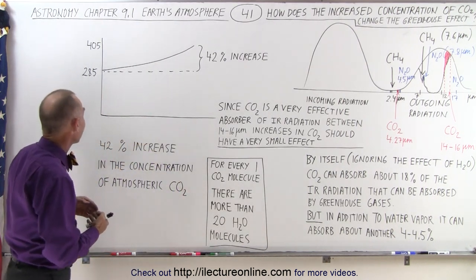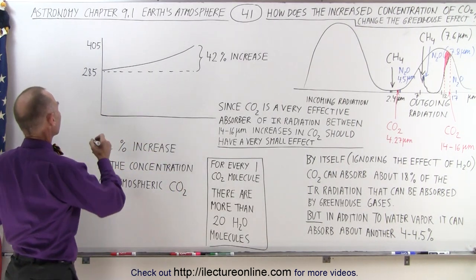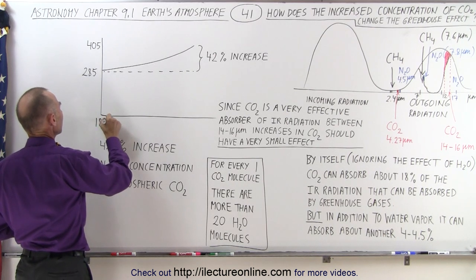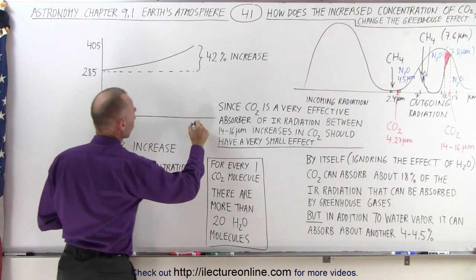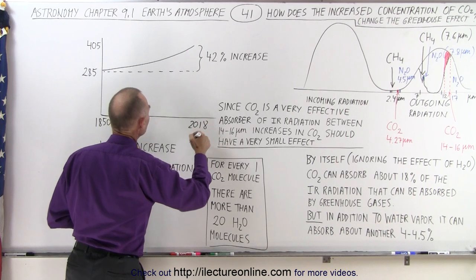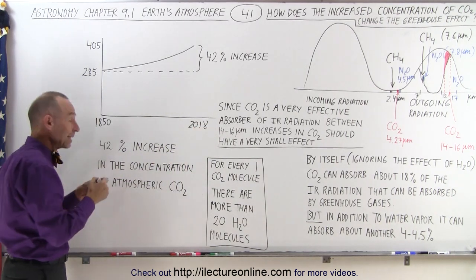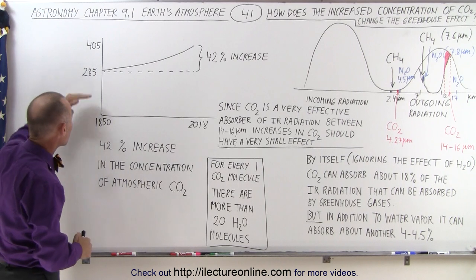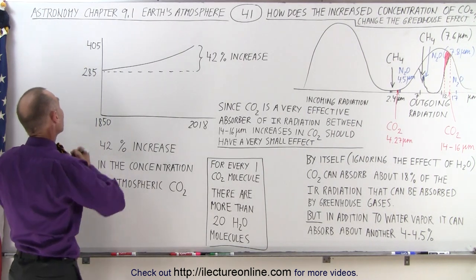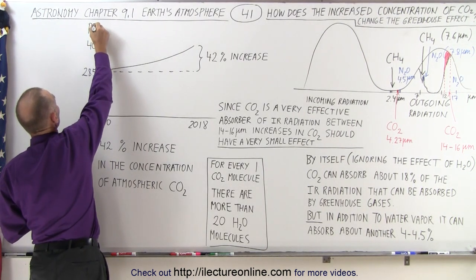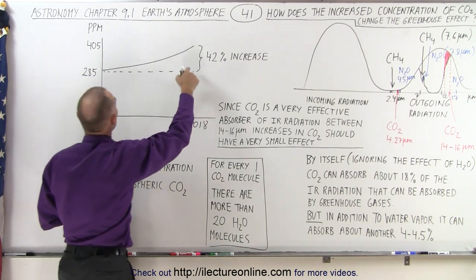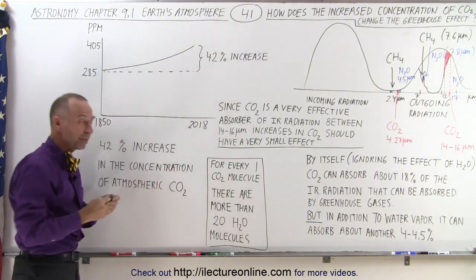We can see here that since 1850, the beginning of the Industrial Revolution, to the current date of 2018, the concentrations of carbon dioxide in the atmosphere have increased from about 285 parts per million to about 405 parts per million.